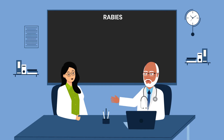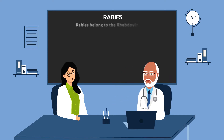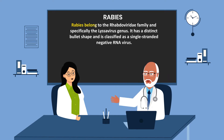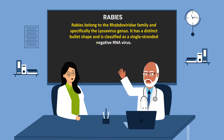Today I want to talk to you about rabies and rabies vaccine. What is rabies? Rabies belongs to the Rhabdoviridae family and specifically the Lyssavirus genus. It has a distinct bullet shape and is classified as a single-stranded negative RNA virus.